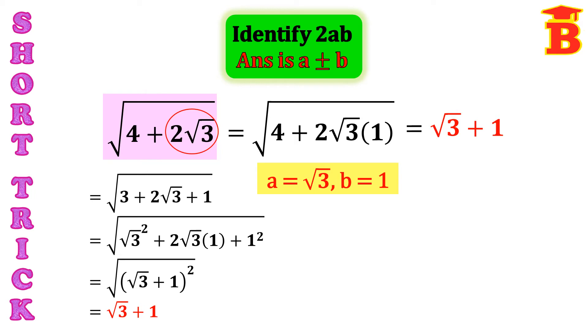And here, the important concept is, this A square plus B square should be the number 4. That is, root 3 square plus 1 square. That is, 3 plus 1, 4.